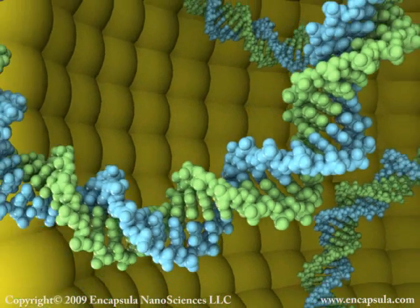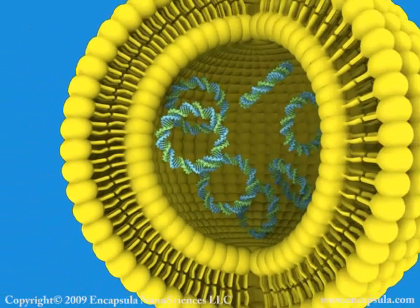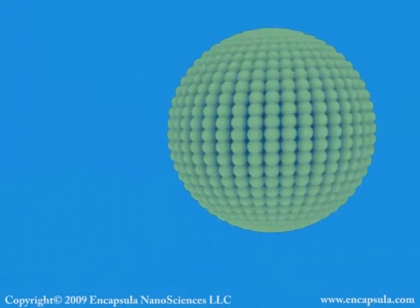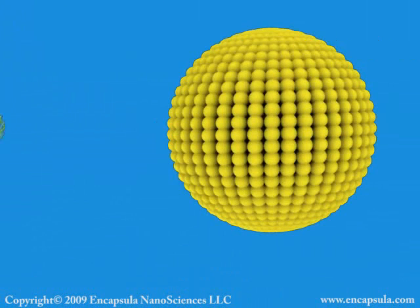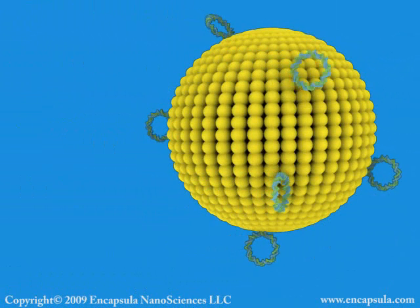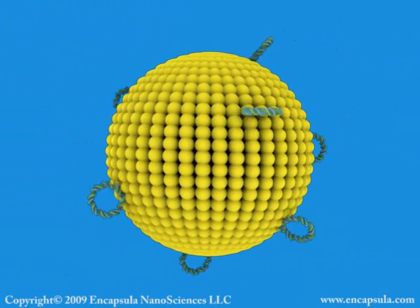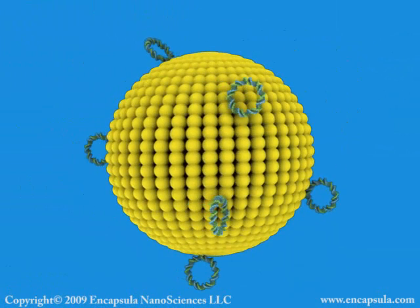Liposomes can encapsulate DNA or RNA in their aqueous space for delivery to cells. Another type of liposome containing positively charged lipids, such as DOTAP, binds the negatively charged nucleic acids to its surface through electrostatic interactions. These so-called lipoplexes can be used to deliver nucleic acids to cells.